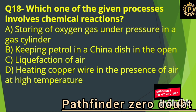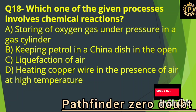Which one of the given processes involves a chemical reaction? Option D, heating copper wire in the presence of air at high temperature.